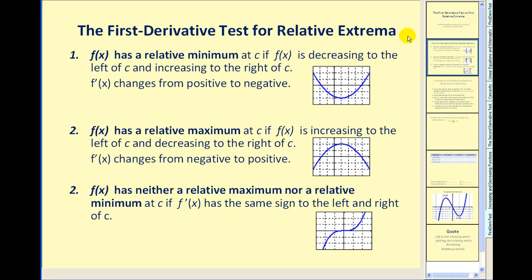The first derivative test for relative extrema: f of x has a relative minimum at c if f of x is decreasing to the left of c and increasing to the right. So if the function is going downhill and then uphill to the left and right of c, you would have a low point or a relative minimum. From the previous video we also know that this would occur where the derivative changes from negative to positive. A negative derivative means the function is decreasing; a positive derivative means it's increasing.